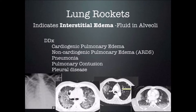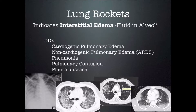Lung rockets indicate interstitial edema — think of it as fluid in the alveoli, though it's really fluid in the interstitial septa. It could be fluid backing up from cardiogenic pulmonary edema, non-cardiogenic pulmonary edema like ARDS, an inflammatory response from pneumonia or pulmonary contusion with blood in the alveoli, or pleural disease which we'll cover later in the lecture.